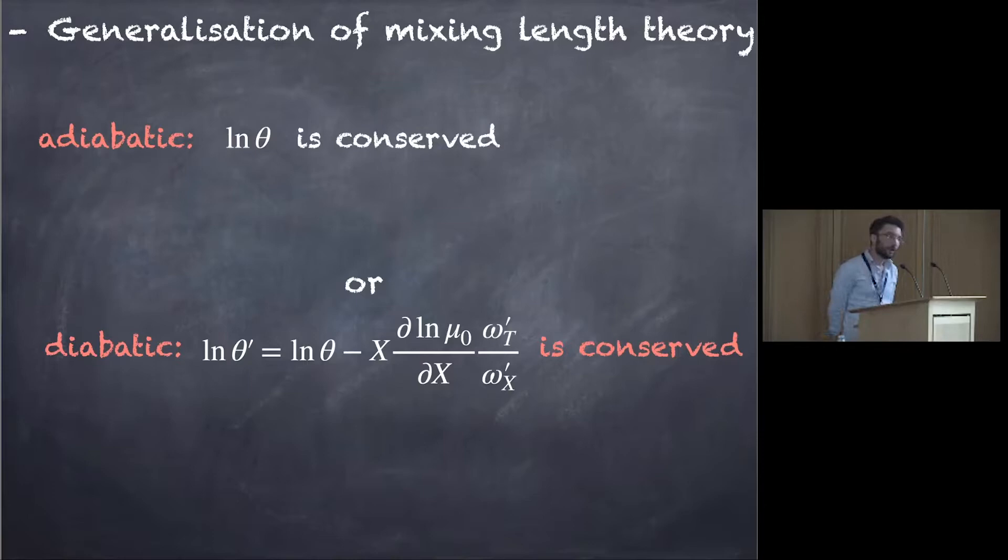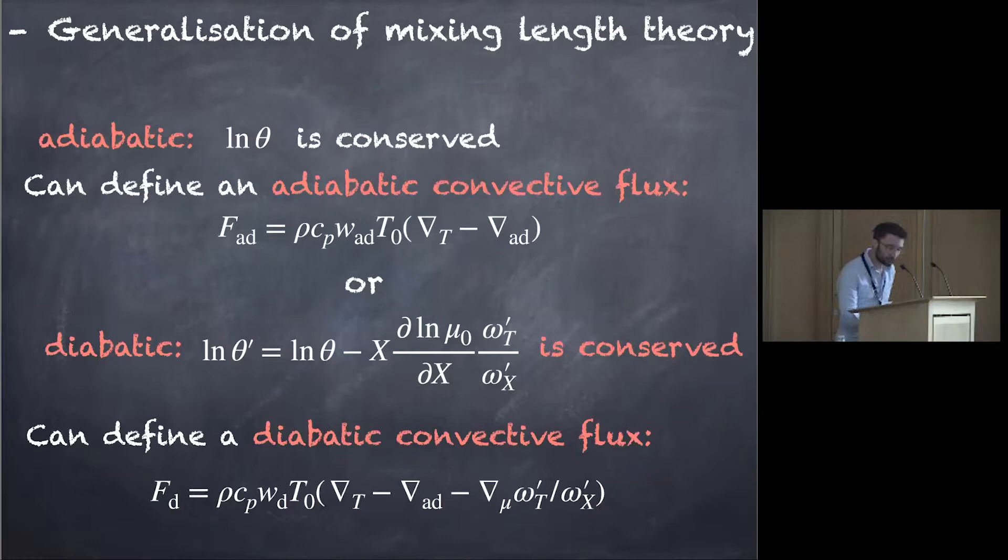And when you're building your mixing length theory, either you take the adiabatic case and you have the standard adiabatic flux that depends on the grad T minus grad ad, as usual, either you can use this new conserved quantity in the diabatic case. And it gives you this extra term here that depends on composition. And it's because of these extra terms that then you can reduce the temperature gradient in your atmosphere.